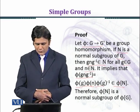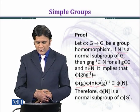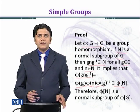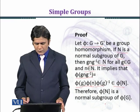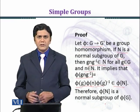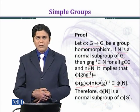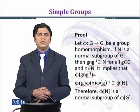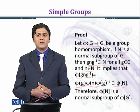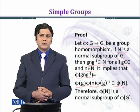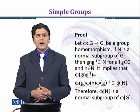So we have proved that phi(N) is a normal subgroup of phi(G). phi(g) and phi(g) inverse belong to phi(G), so phi(g) is an element of phi(G).